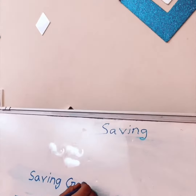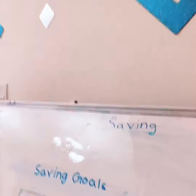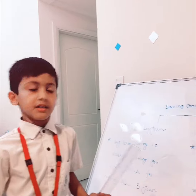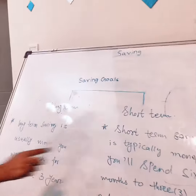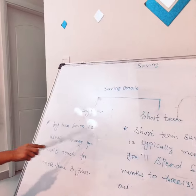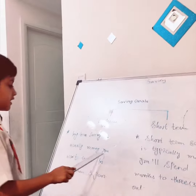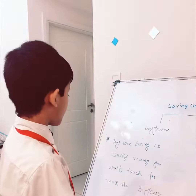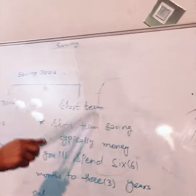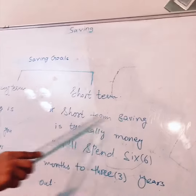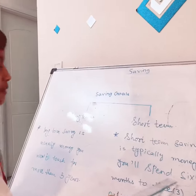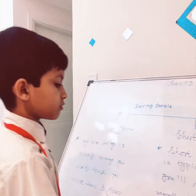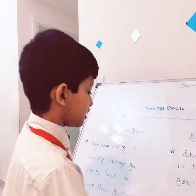Now I will tell you about saving goals. There are two types of saving goals: long term and short term. Long term saving is usually money you won't touch for more than three years. Short term saving is typically money you will spend six months to three years out.